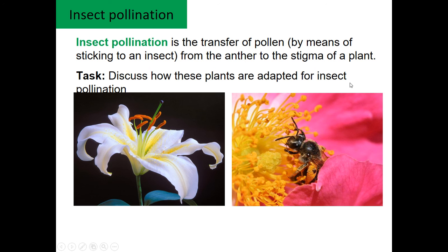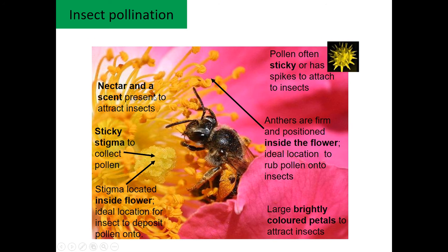We're going to look at why flowers are adapted to different pollination methods — this is a piece of work you'll do at the start of Wednesday's lesson. For insect pollination, insects go to the flower to get nectar, so the nectar and scent attract them. The sticky stigma collects the pollen off the insect and is located inside the flower, so the insect has to climb in to get the nectar, getting covered in pollen along the way. The anthers are inside the flower, and there are large, brightly coloured petals to attract the insects.